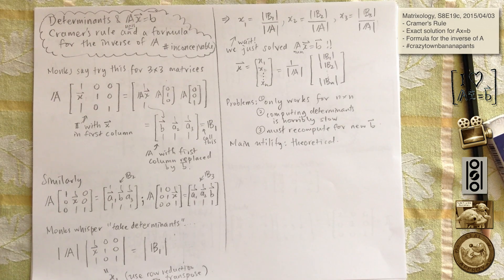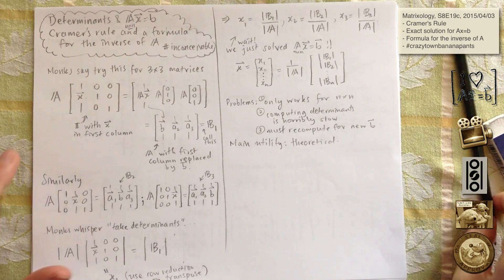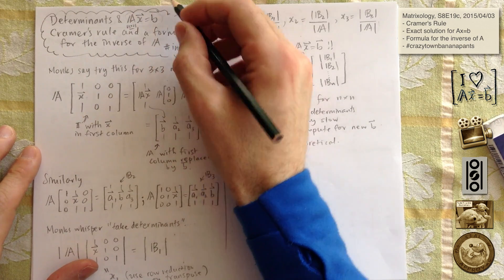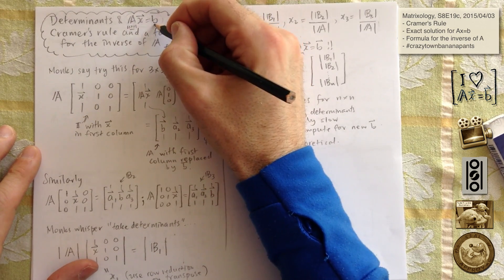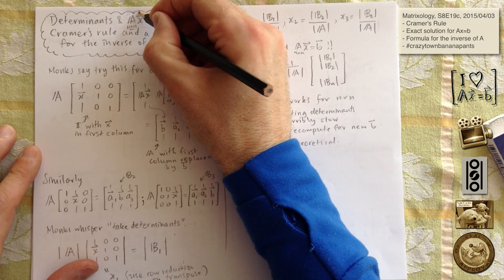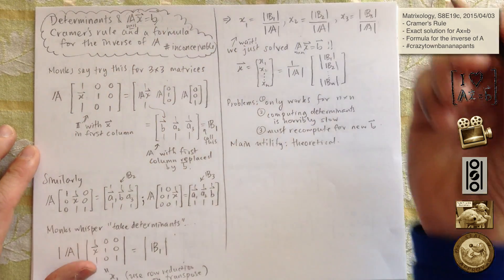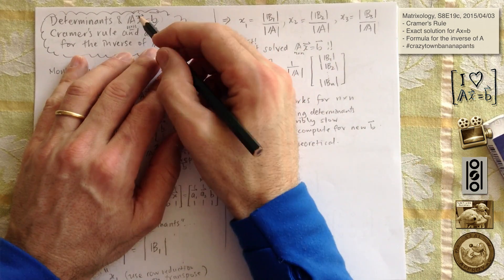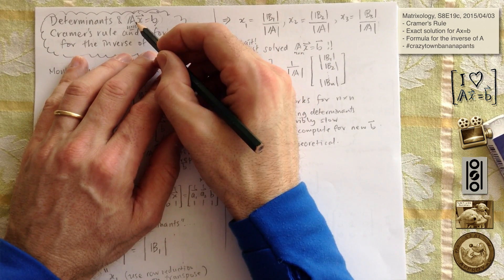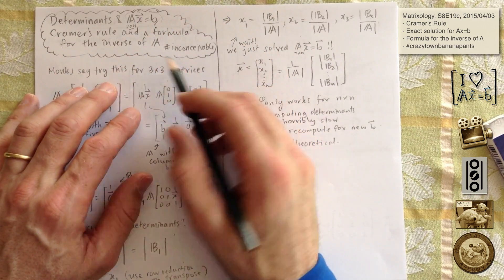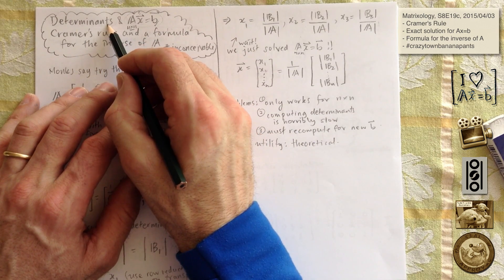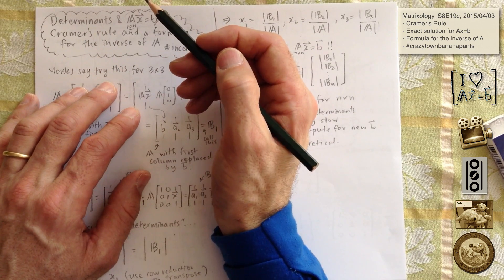Cramer's rule and finding an inverse of A. We're back to Ax equals b, solving a problem. We know b, we know A, we're trying to find out what x is. We're only working on n by n's — this is for square matrices — and somehow determinants are going to help us here, so that's peculiar.